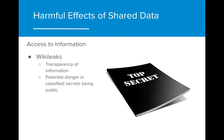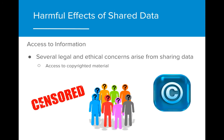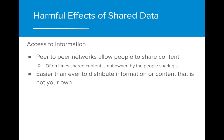Now let's talk about some of the harmful effects of shared data. There's a big question as to whether access to all information is actually a good thing. The website WikiLeaks posts classified information that either governments or corporations are trying to keep secret. On one hand, this is good because it promotes transparency of information and makes it so corporations and the government can't keep secrets from citizens. However, there's potential danger in having classified secrets made public. There are also legal and ethical concerns that arise when sharing data, including access to copyrighted material. Peer-to-peer networks allow people to share content or data that they have on their computers — this is fine if the files are their own creation, but oftentimes shared content is not owned by the people sharing it.